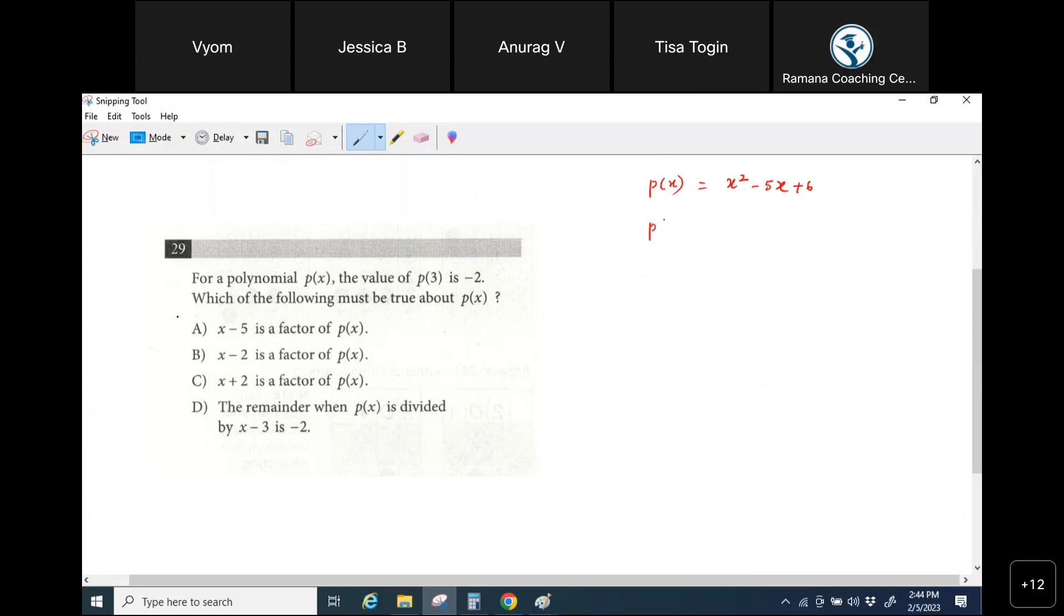When I say p of 3, what does that mean? I am substituting x equals 3, right? Correct. What do I get? 3 squared minus 5 times 3 is 15 plus 6, you'll get a 0.